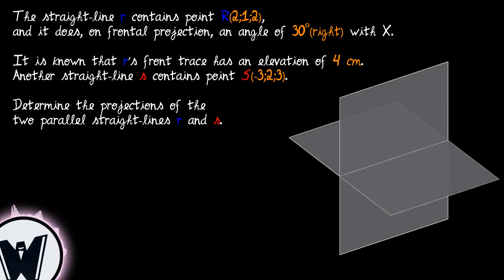The straight line R contains point R with coordinates 2, 1 and 2, and it does on frontal projection an angle of 30 degrees to the right with the x-axis. It is known that R's front trace has an elevation of 4 cm.